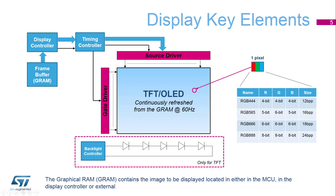First, a memory — or GRAM, or graphical RAM — is needed to store the image to be displayed, which is also called the frame buffer. A display controller is then needed to fetch the data from the GRAM. This controller then sends the data and timing information to the timing controller, which converts them into synchronization pulses to refresh each pixel of the panel. The gate driver then addresses each line of the panel, while the source driver addresses each pixel of each line. Each pixel is given a specific amount of red, green, and blue to create the final pixel color, depending on the display color depth.